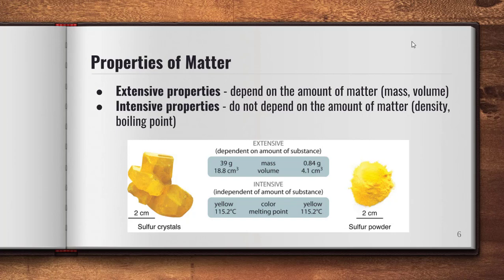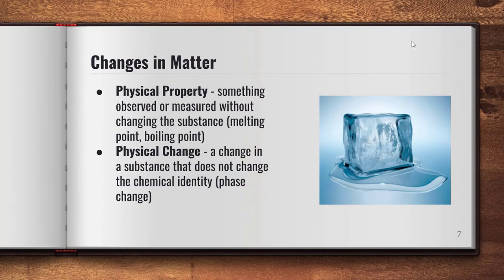Intensive properties do not depend on the amount of the substance. Examples include density and boiling point. Whether I have a glass full of water or a bathtub full of water, the density does not change, nor does the boiling point — water still boils at 100 degrees Celsius regardless of the amount. So: intensive properties do not depend on amount; extensive properties do.